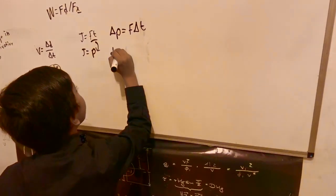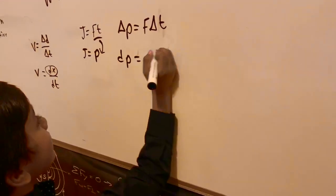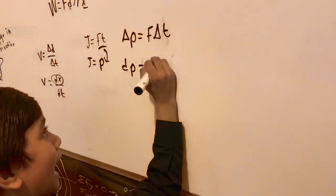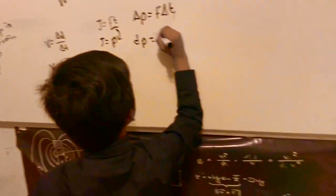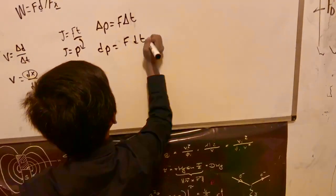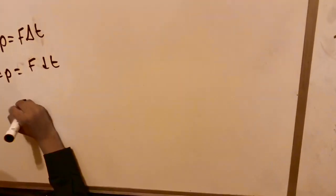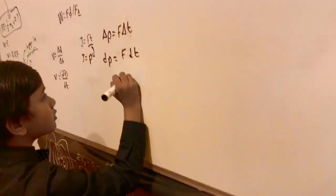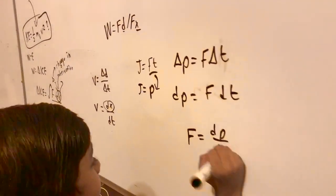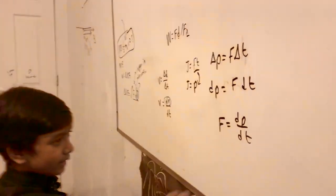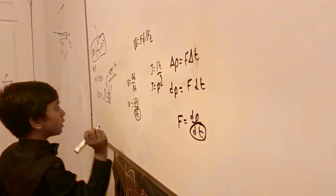Then we can write dp to be equal to f dt. Now, that gives us just an f equal to dp over dt. And that's where the second piece of our equation comes from.